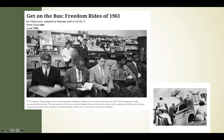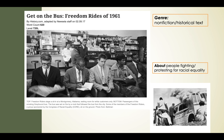The bottom caption reads: 'Passengers of this smoking Greyhound bus - the bus was set on fire by a mob that followed the bus from the city. Some members of the Freedom Riders, a group sponsored by the Congress of Racial Equality (CORE), sit on the ground.' So I'm thinking a group of activists fighting for racial equality were attacked, maybe by people who didn't want racial equality. Orienting to the text, I predict the genre is non-fiction or historical text, and it will be about people fighting and protesting for racial equality.